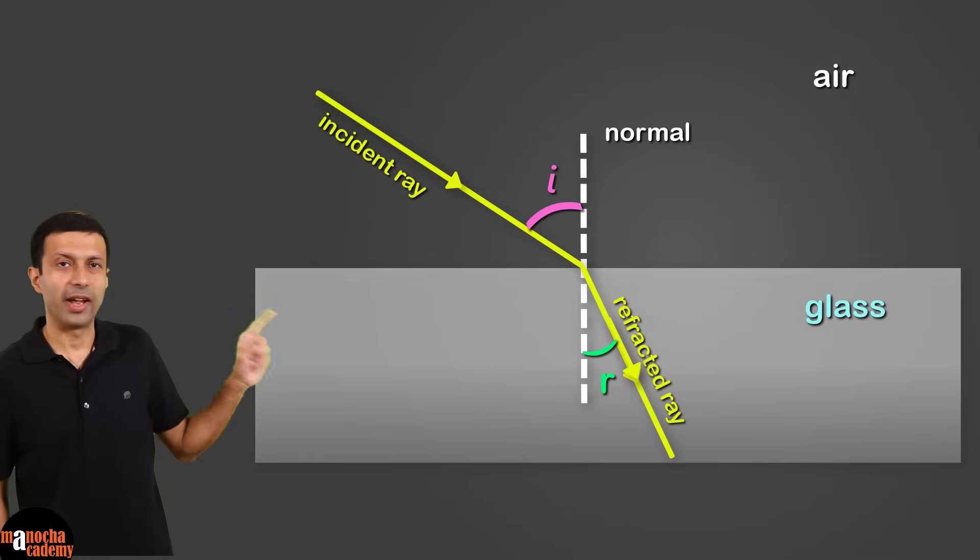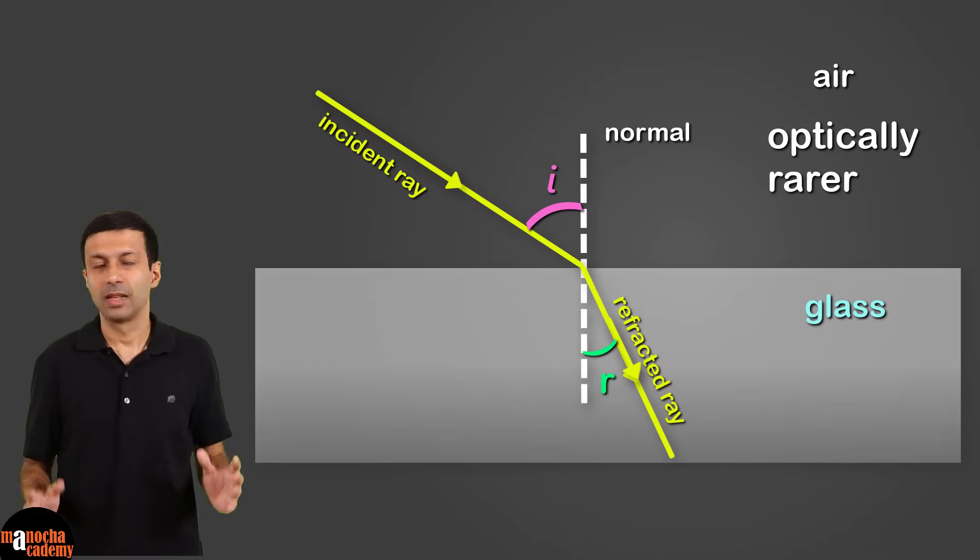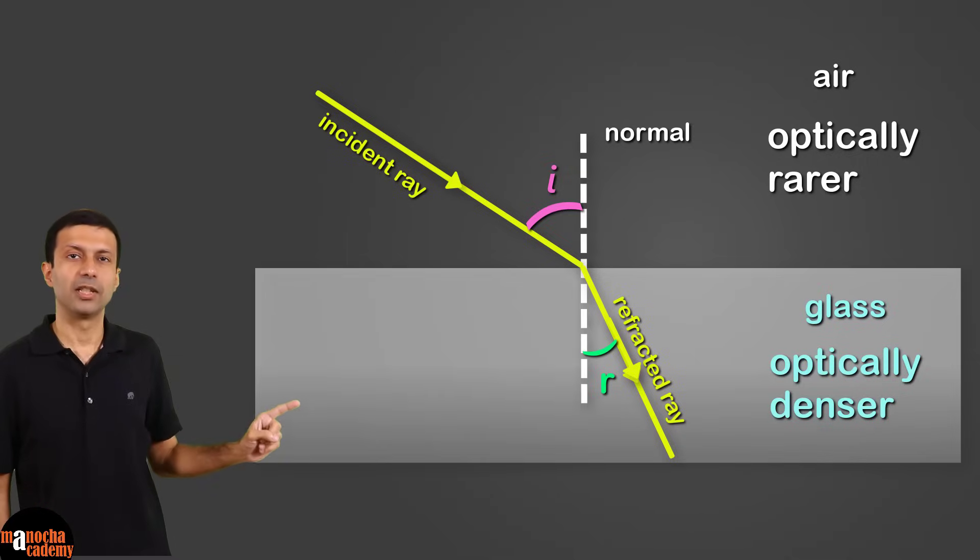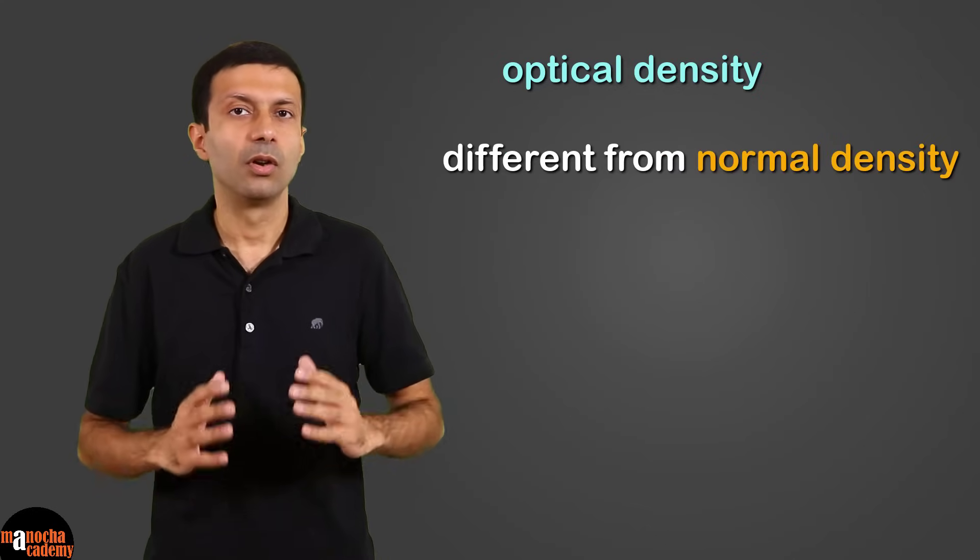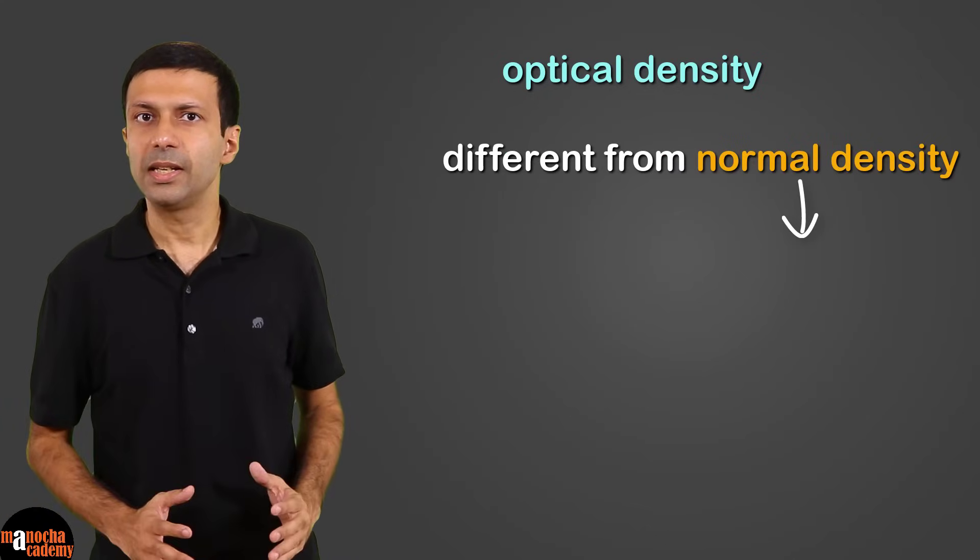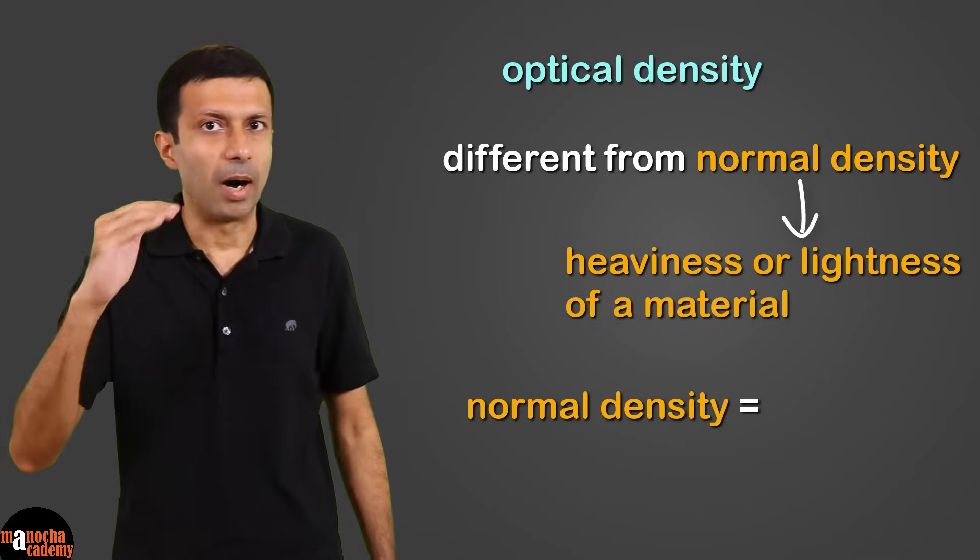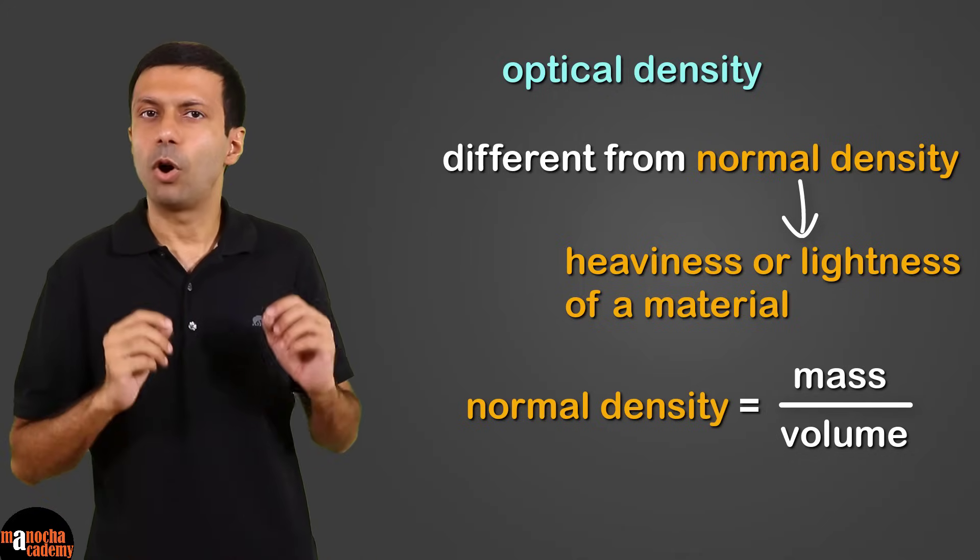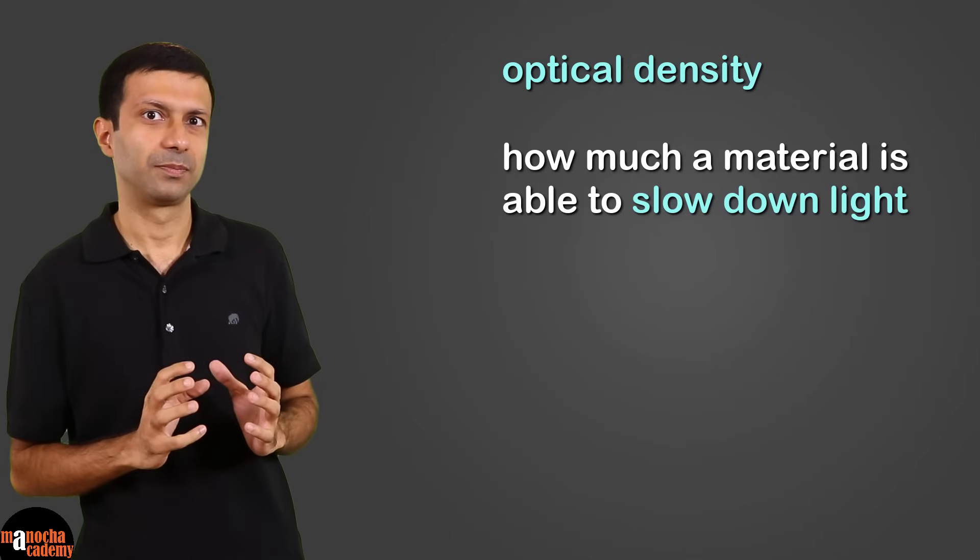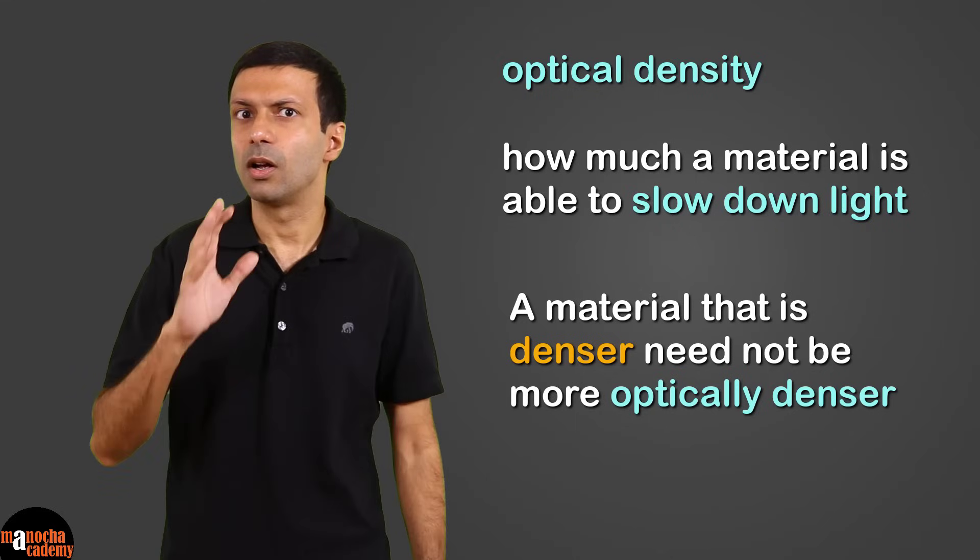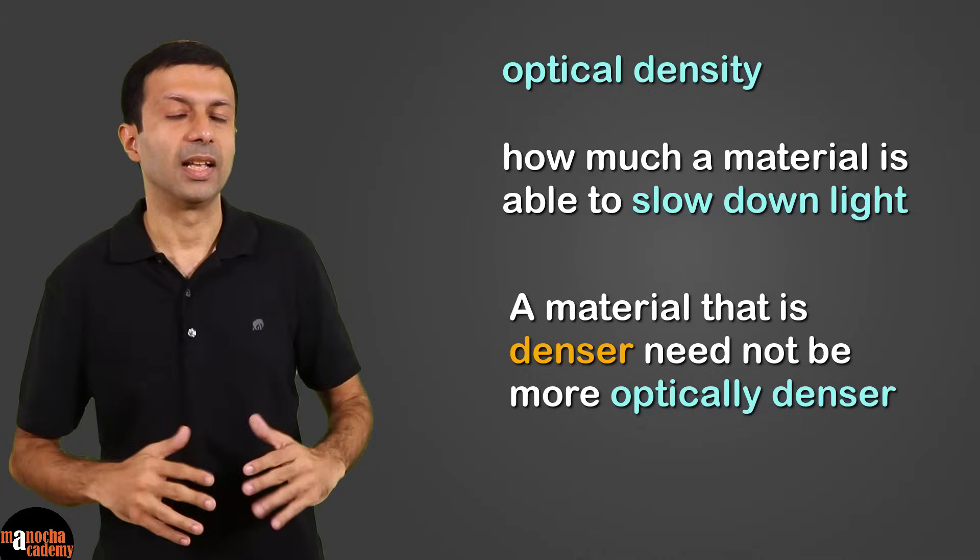Here air is the rarer medium, or to be more precise, optically rarer medium. And glass is the optically denser medium. We use the term optical density because it's different from normal density. Normal density is the heaviness or lightness of a material and is measured as mass by volume. But optical density measures how much a material is able to slow down light. And note that a material that is denser than another one need not be more optically denser than the other material.